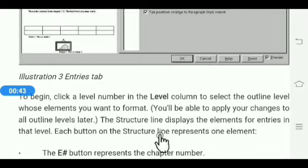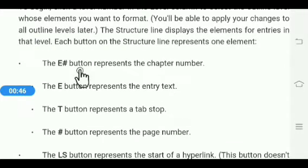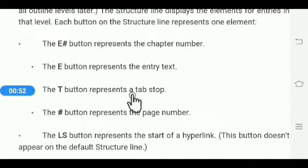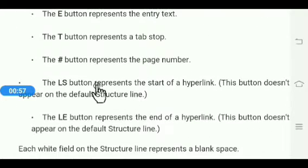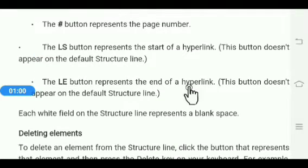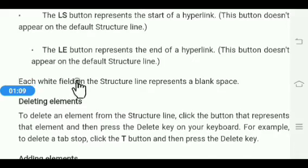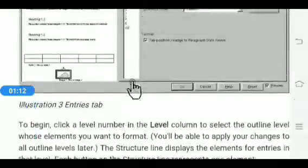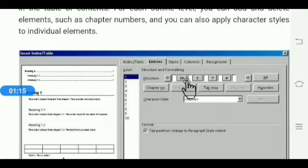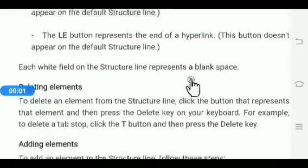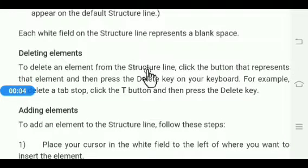Each button on the structure line represents one element: the E# button represents the chapter number, the E button represents the entry text, the T button represents a tab stop, and the # button represents the page number. The LS button represents the start of a hyperlink and the LE button represents the end of a hyperlink. Each white field on the structure line represents a blank space.